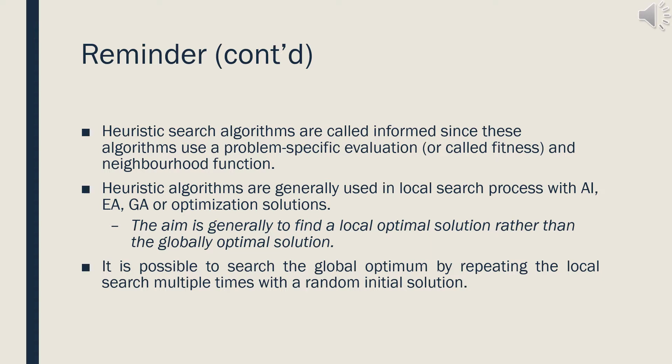Heuristic algorithms are generally used in local search processes with artificial intelligence, evolutionary and genetic algorithms, or optimization solutions. Generally, the aim is to find a local optimal solution rather than the global optimum. However, it is also possible to search for the global optimum by repeating the local search multiple times with a random initial solution.